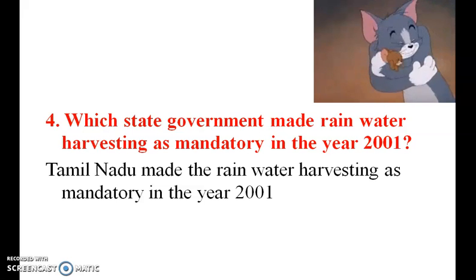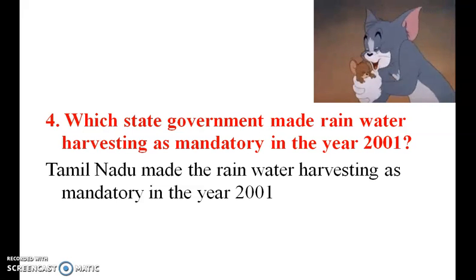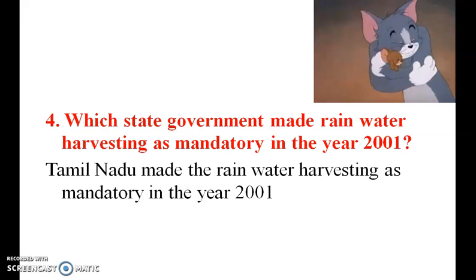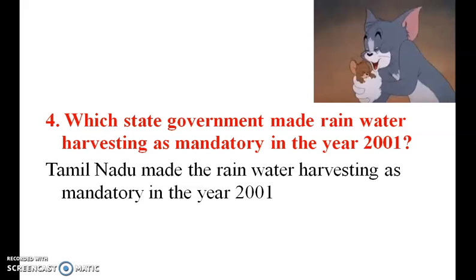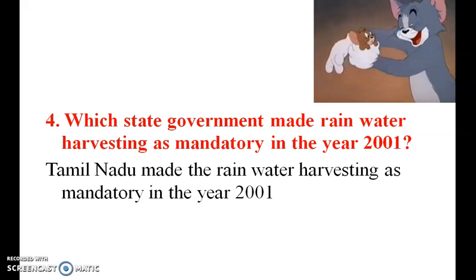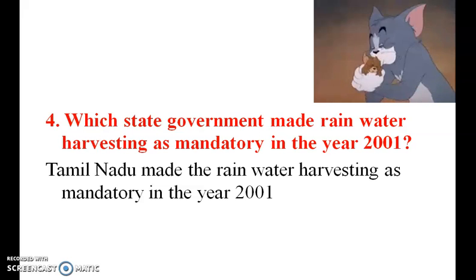Which state government made rainwater harvesting mandatory in the year 2001? Yes, Tamil Nadu made rainwater harvesting mandatory in the year 2001.